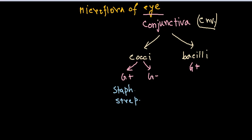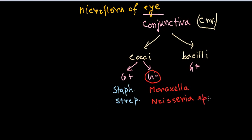The gram-negative cocci are a rare type — I'm writing them in red to highlight this. In this group we have two different types: Neisseria species and Moraxella species. These are unique to the conjunctival microflora and are not found in the skin microflora, whereas the rest of the organisms mentioned are also found in skin microflora.